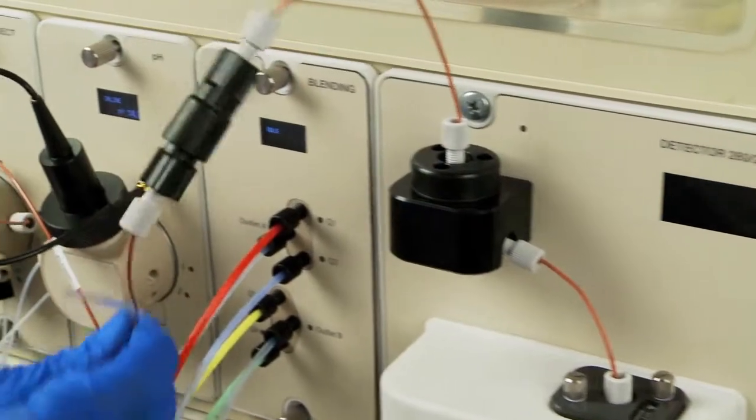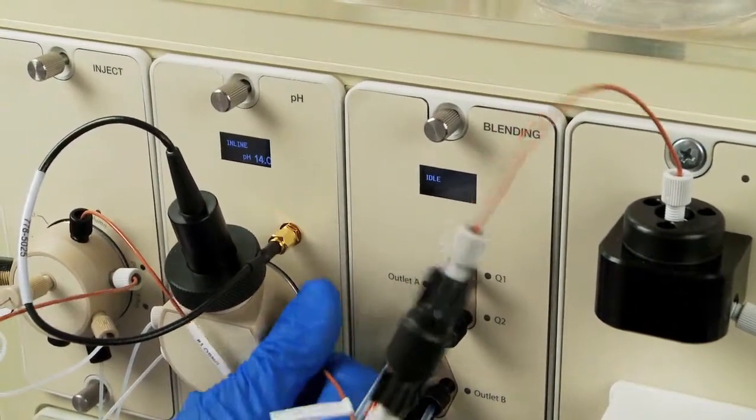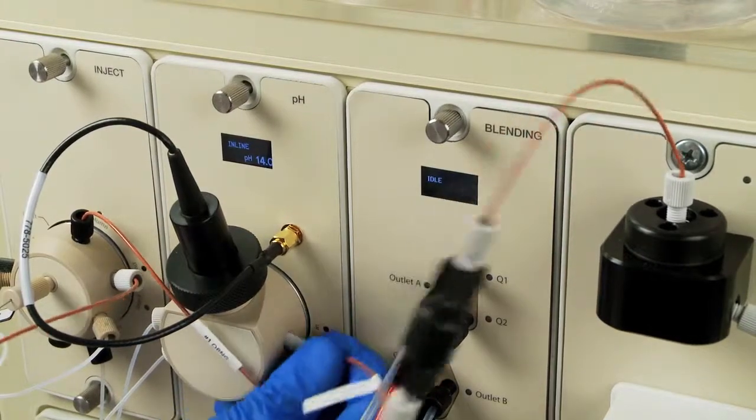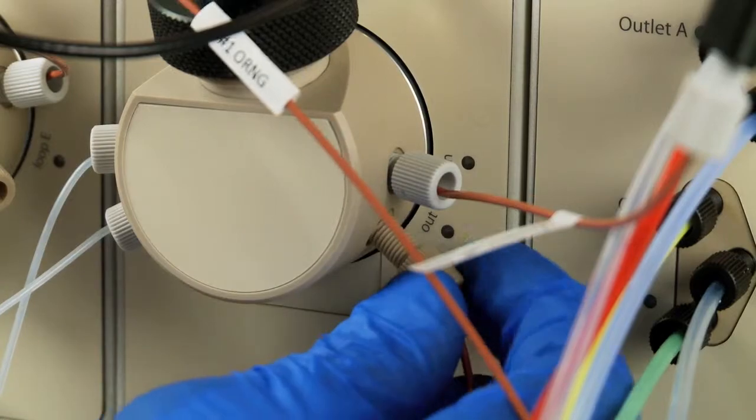Connect line number 2 from the 40 PSI back pressure regulator to the inlet port labeled IN on the pH valve. Connect line number 4 to the outlet port labeled OUT on the pH valve.